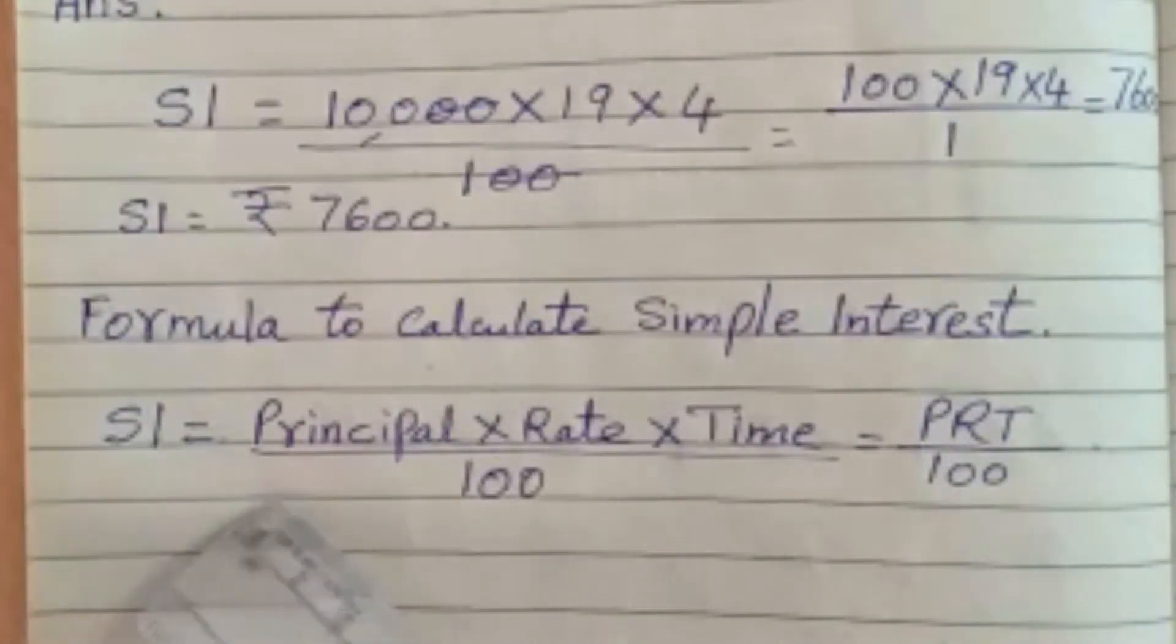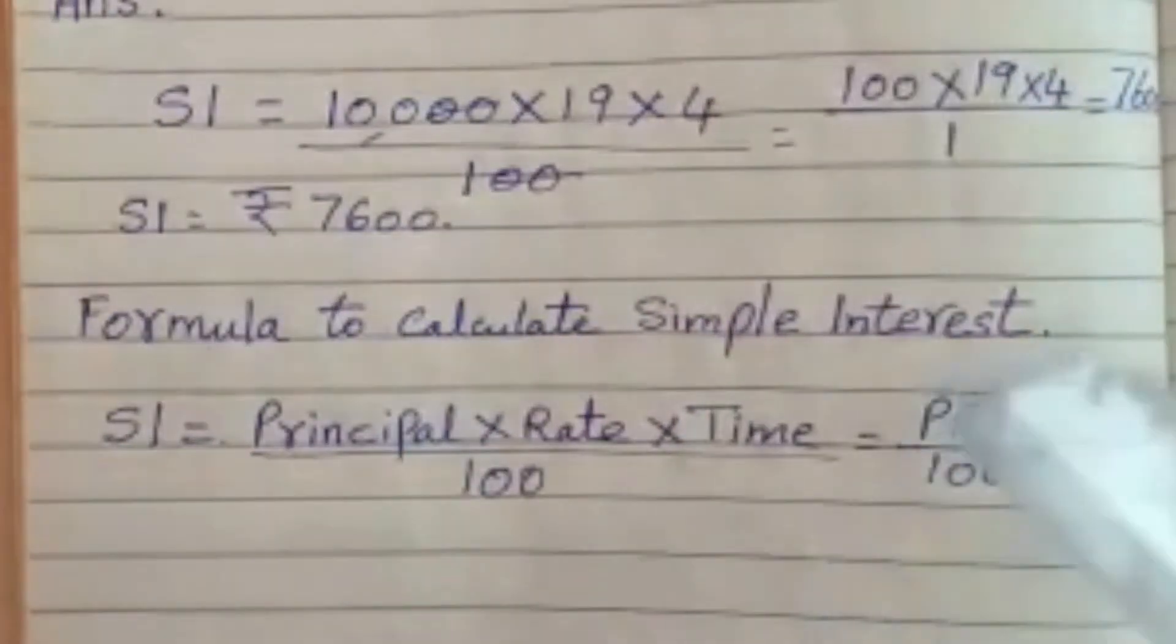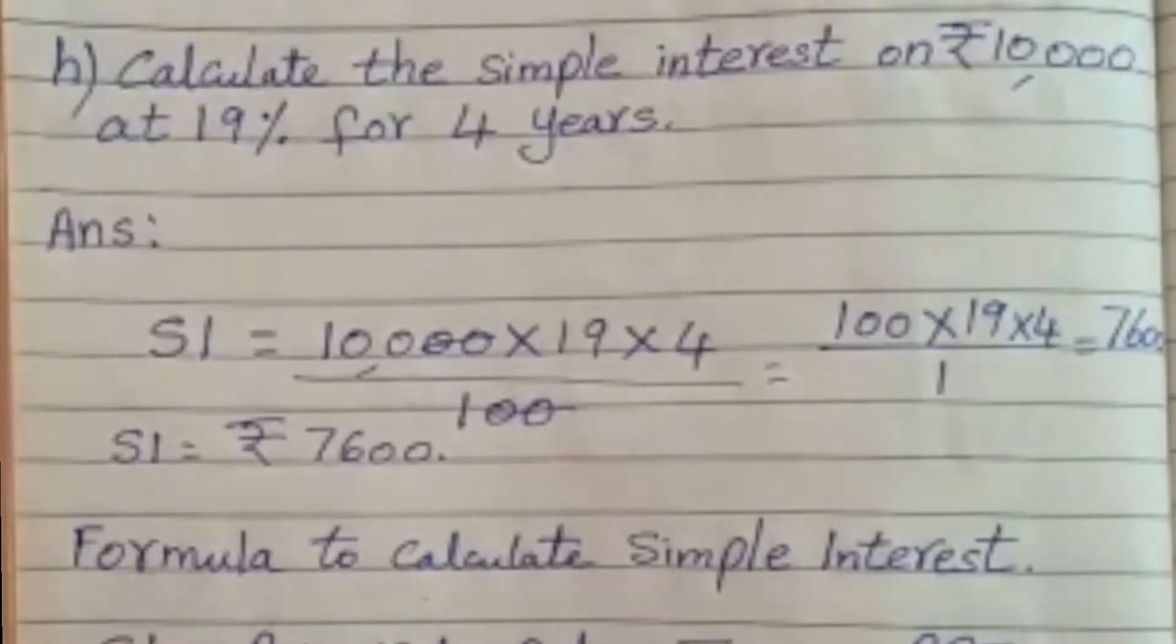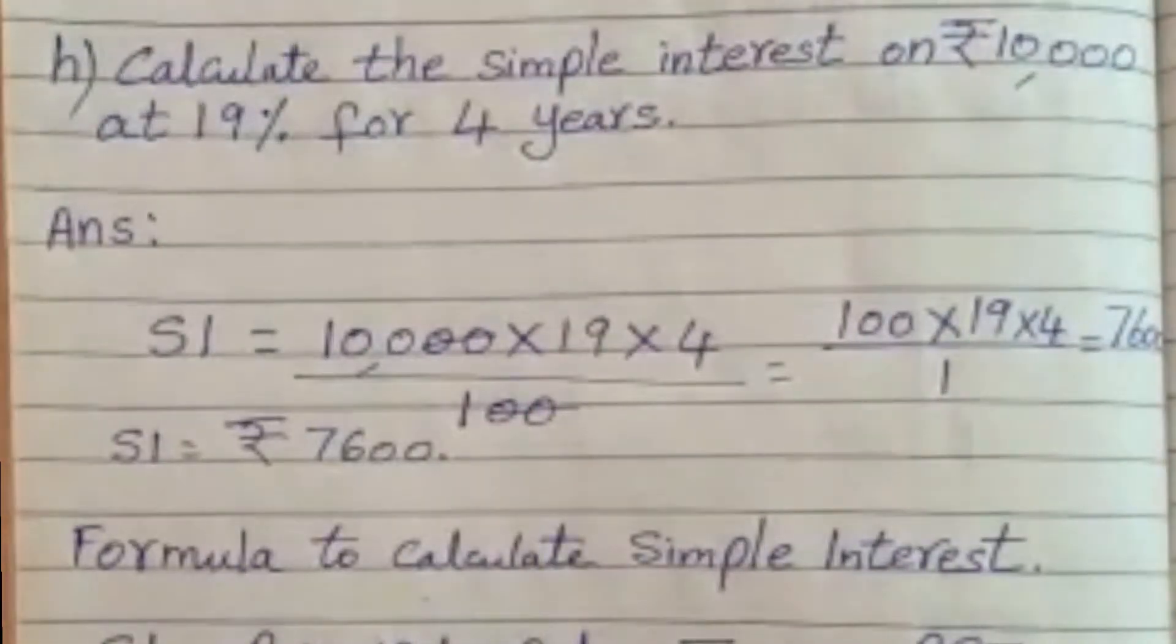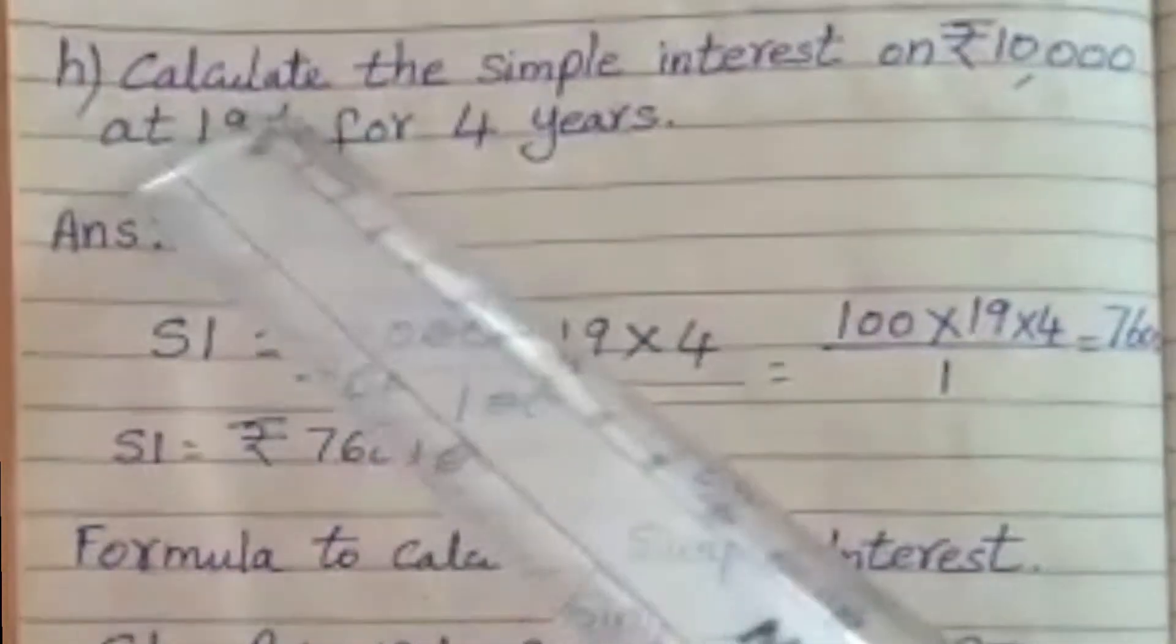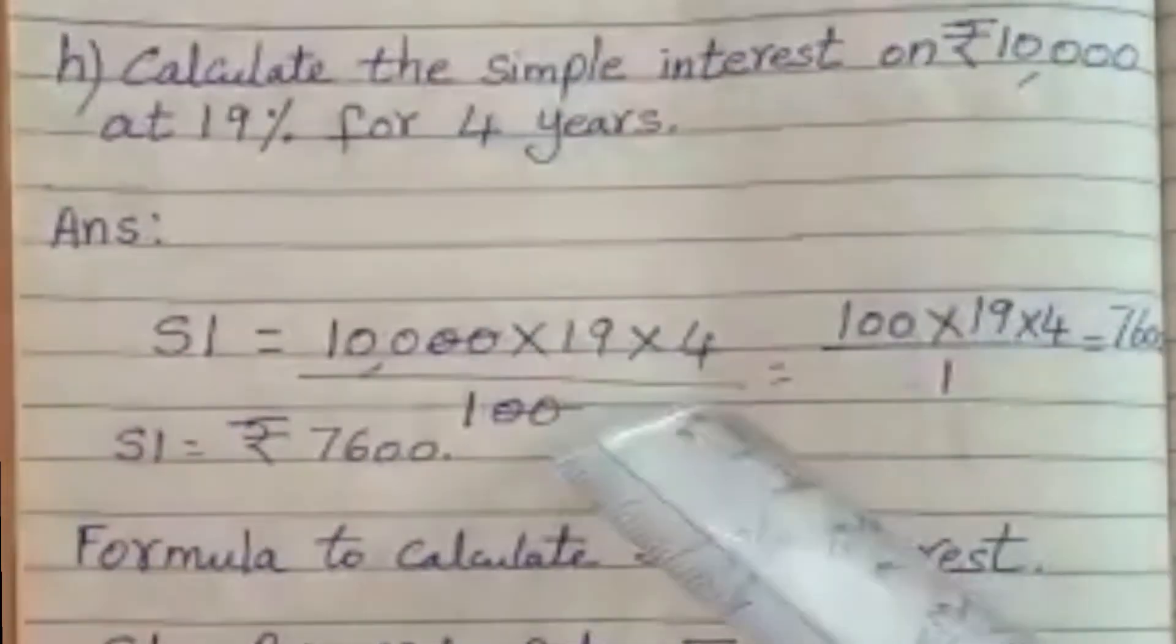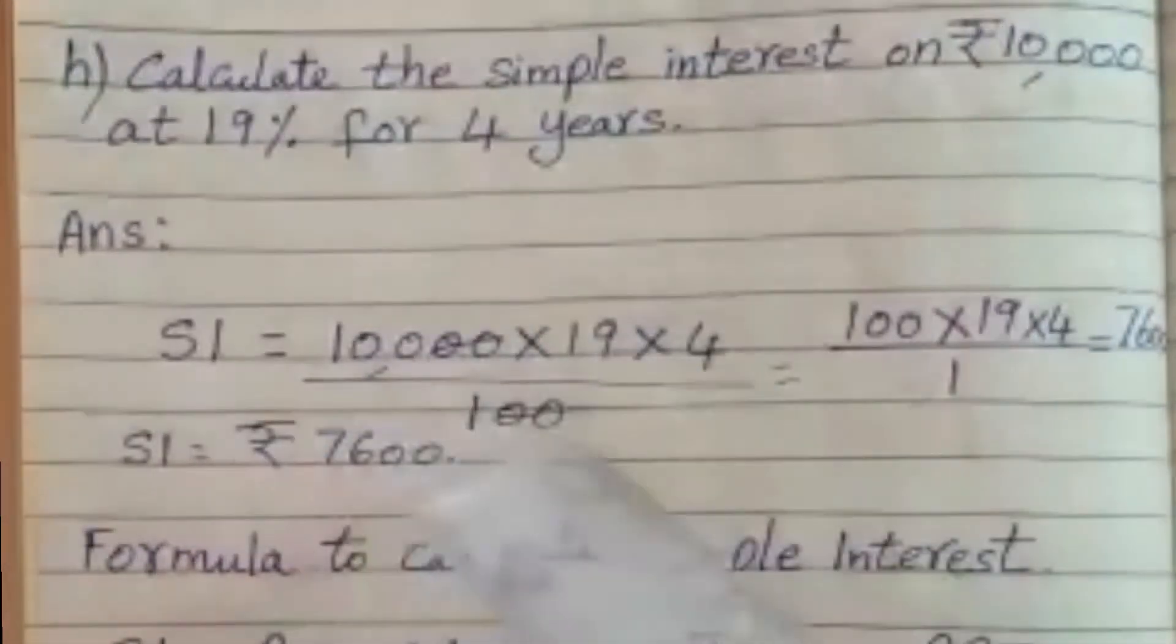Simple interest is equal to principal into rate into time by 100. That is equal to PRT by 100. So here principal is 10,000 rupees, and the rate is 19%. Percent is nothing but divided by 100. And the time is 4 years. So 10,000 into 19 into 4 by 100.